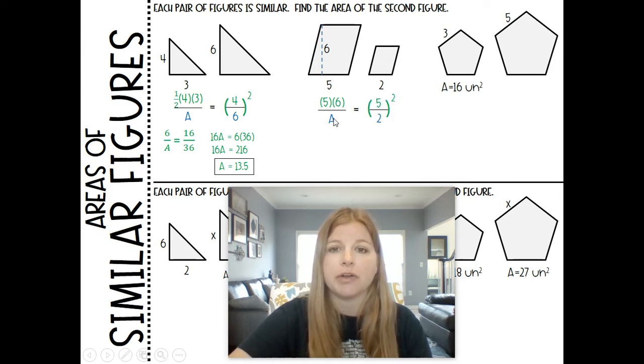This one becomes 30 over A equals 25 over 4. Let's cross multiply. So we get 25A equals 4 times 30. We solve for A and we end up getting 4.8. So the area of this second parallelogram is 4.8 units squared.